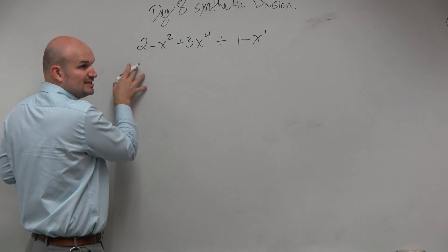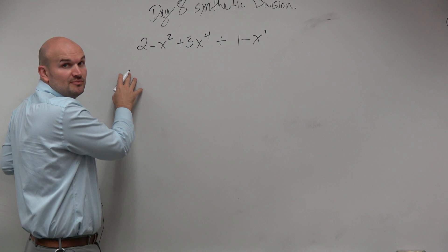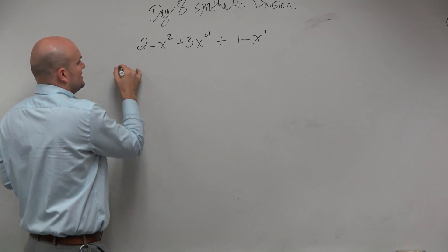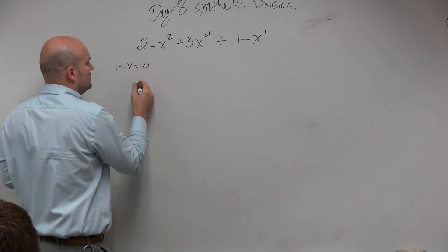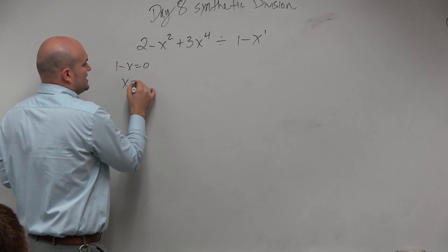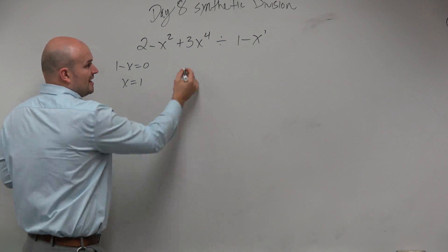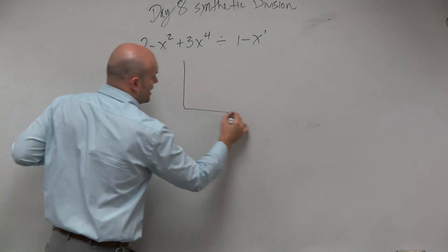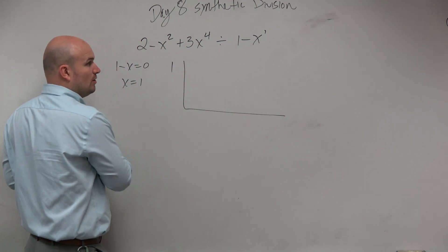What we want to do is try to treat this like it's equal to 0. So the first important thing would be to set this 1 minus x equal to 0. And therefore, we could say x is going to equal 1.